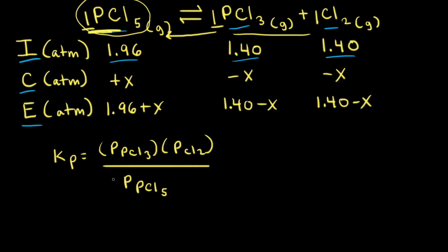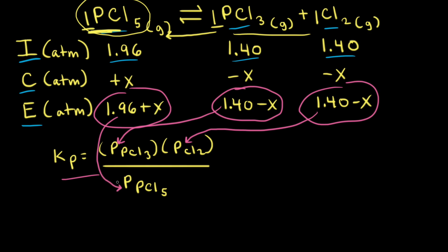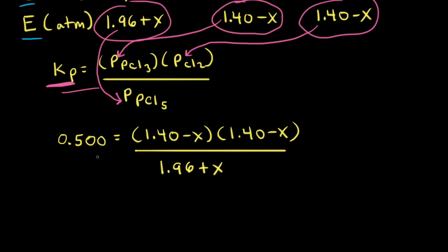Next, we plug the equilibrium partial pressures into the Kp expression: (1.40 − X)(1.40 − X) divided by (1.96 + X), set equal to 0.500. Solving for X requires a quadratic equation. When you work through all the math, you find that X is equal to 0.330.